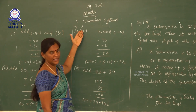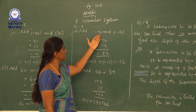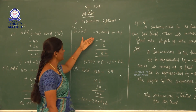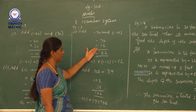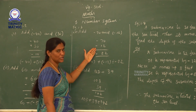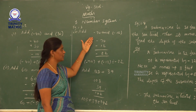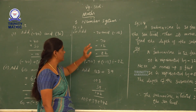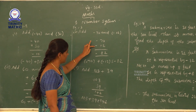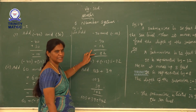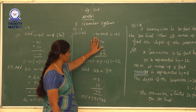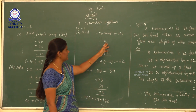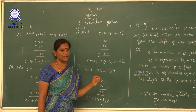Next, example 1.3 — add minus 70 and minus 12. The signs are the same, so we put the same sign in the answer. The signs are both minus, so put minus in the answer. Now we add the two numbers: 70 plus 12 is 82. So the addition of minus 70 and minus 12 is minus 82.